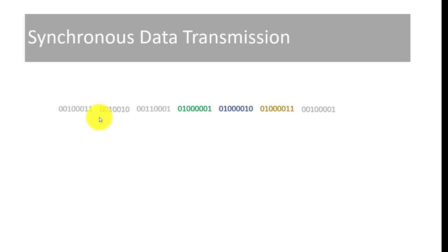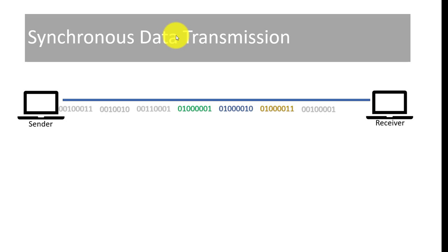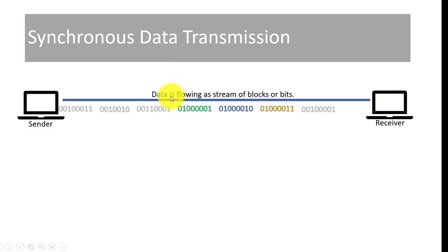Then we have synchronous data transmission. Synchronous data transmission has a sender, receiver, and communication channel. The process of our data is flowing as a stream of blocks and bits.